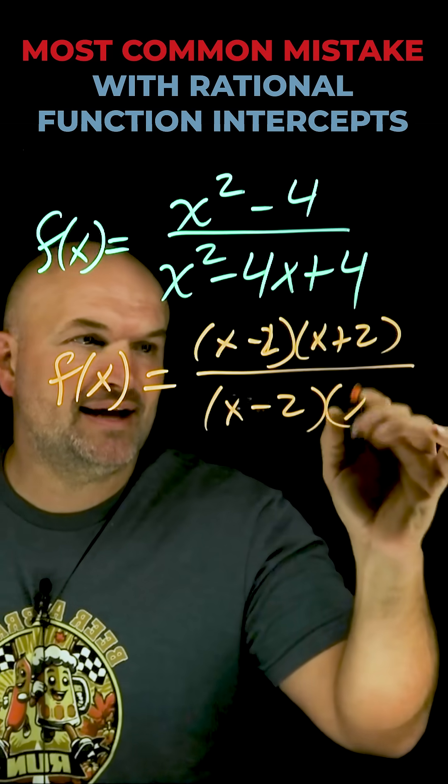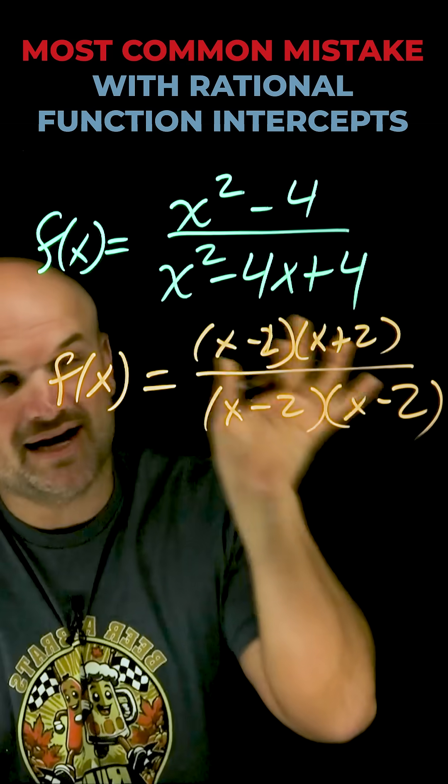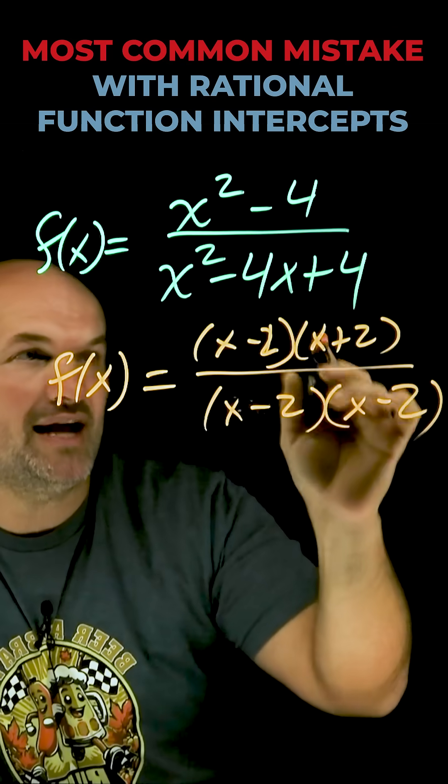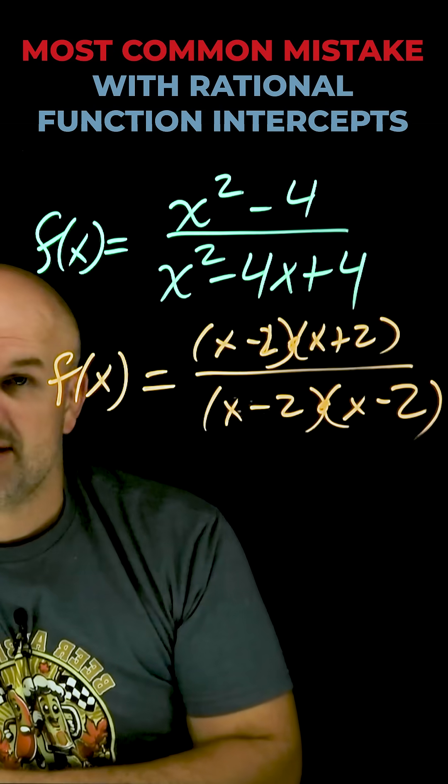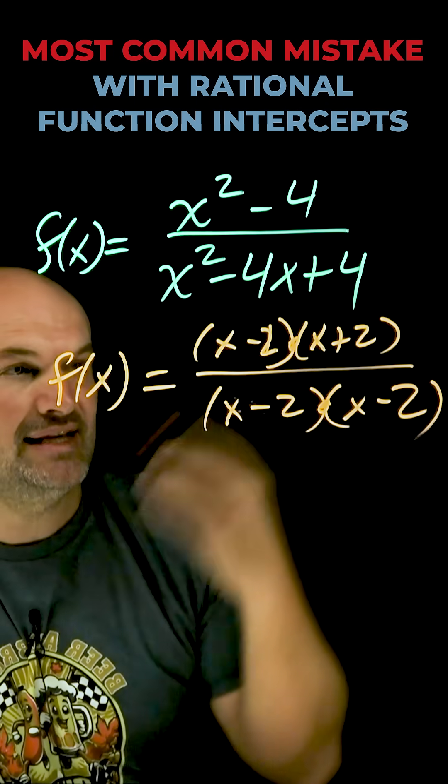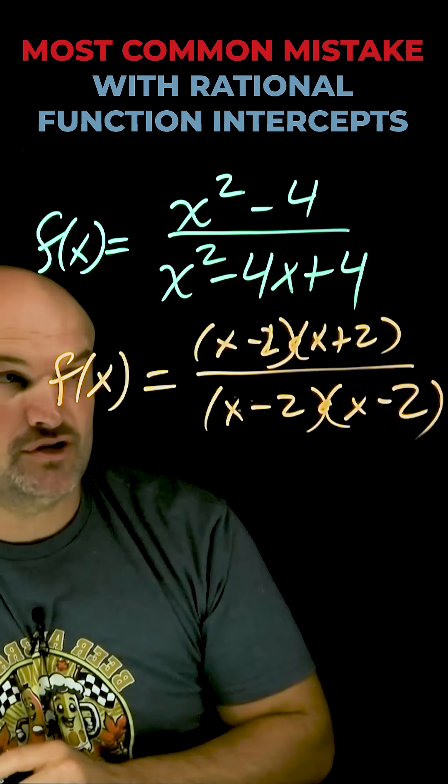So when I go ahead and factor this, you now have it in factored form. I have rewritten this expression as a product. The reason why that's so important is because once you rewrite an expression as a product, you can now apply the division property for rational functions.